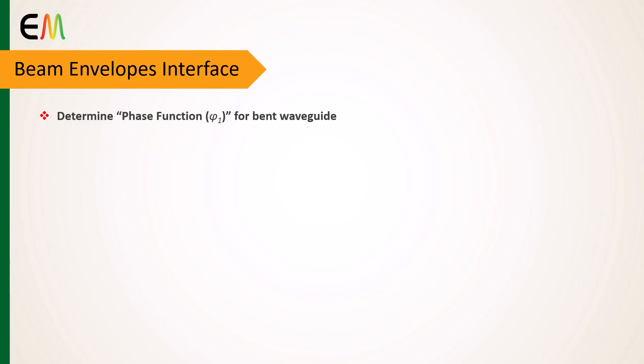To obtain accurate results with the beam envelopes interface using the minimum number of degrees of freedom, the phase function must be correctly defined. As an example, we will simulate a bent waveguide.